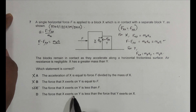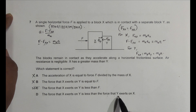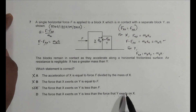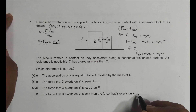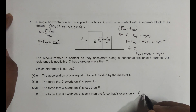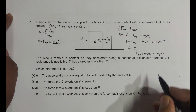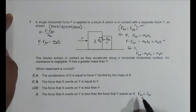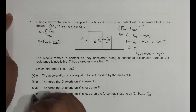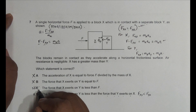Option D claims that F_XY is less than F_YX. This is untrue because by Newton's 3rd law they are equal — F_XY = F_YX. Therefore, the correct answer is option C.